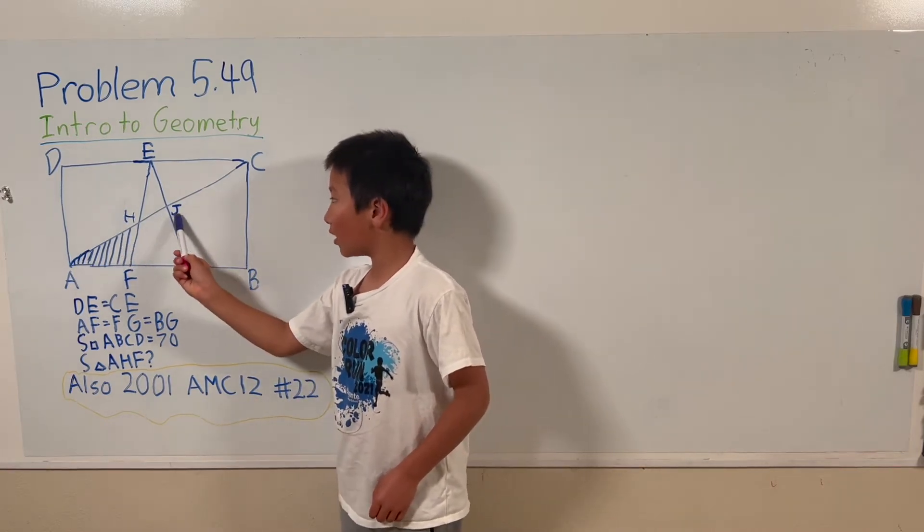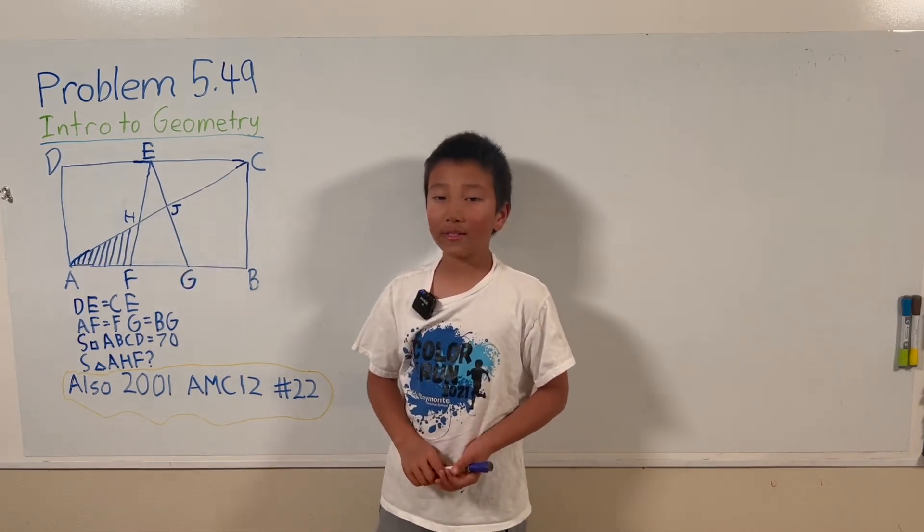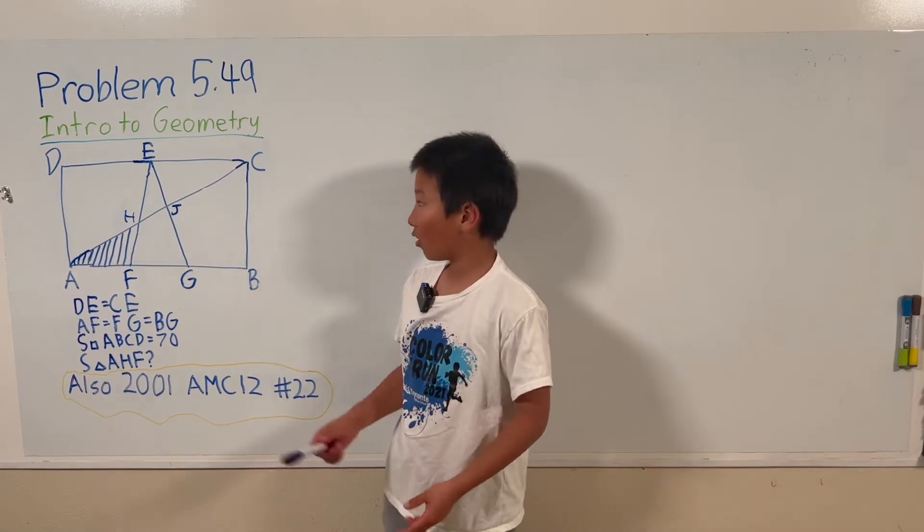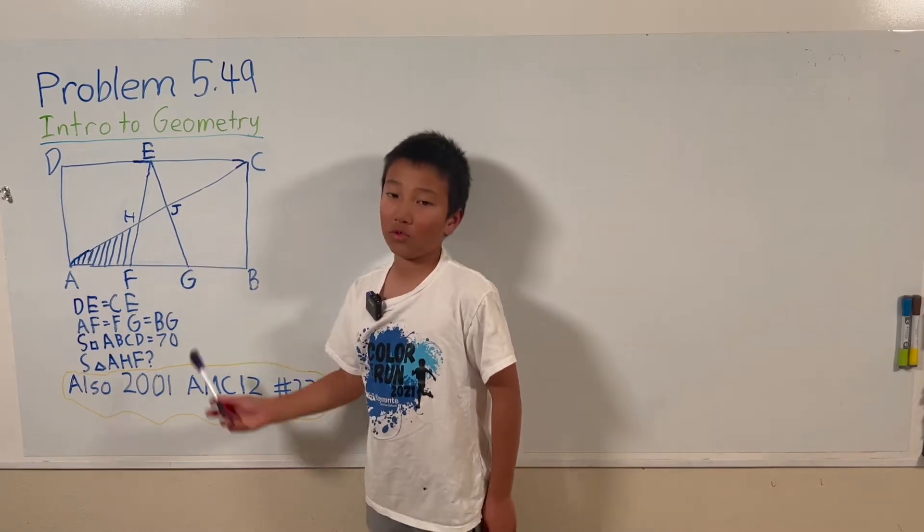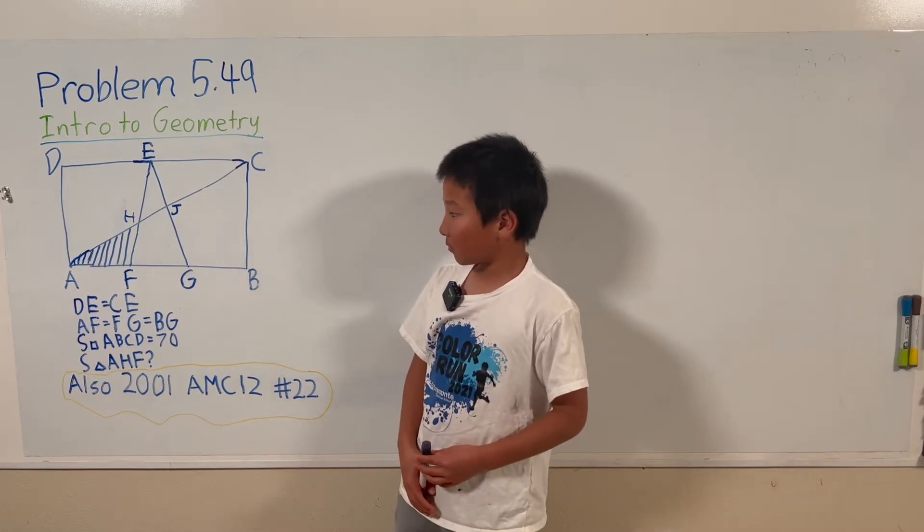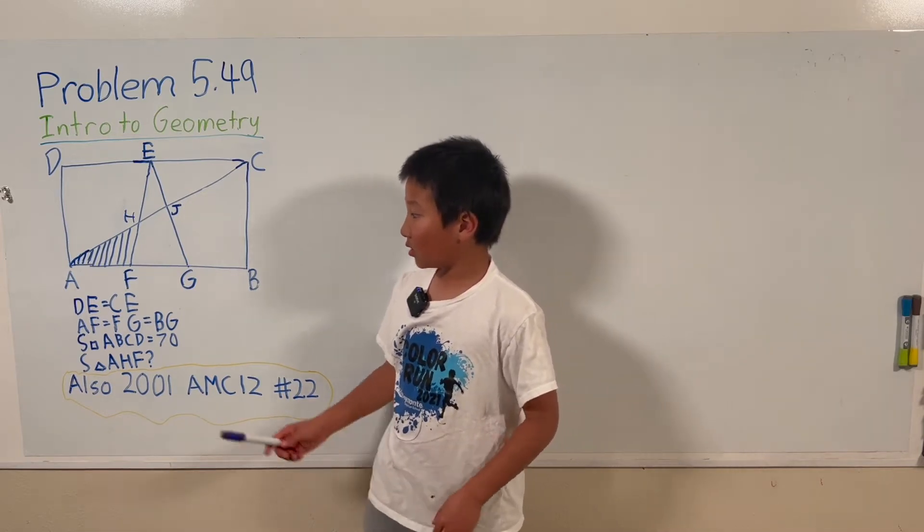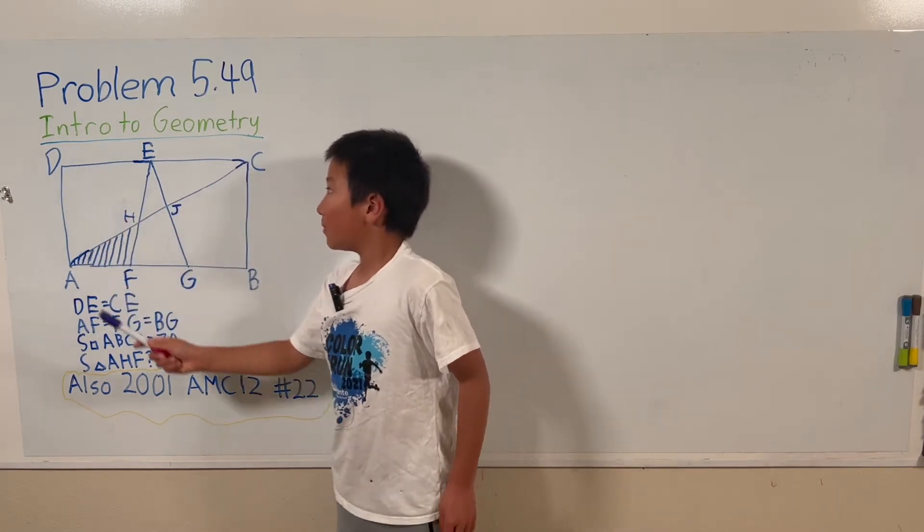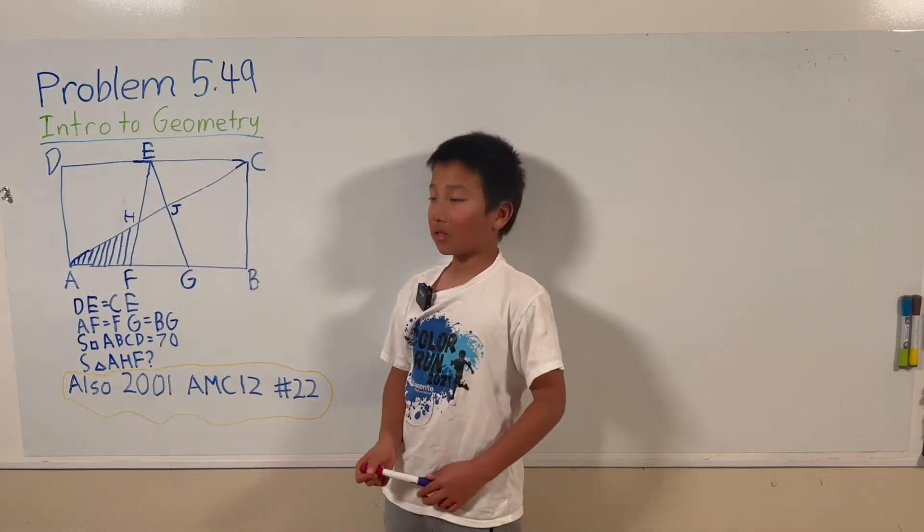H and J are the points that are made by the intersecting diagonal and the triangle formed by E, F, and G. We also know that the area of this rectangle ABCD is 70.